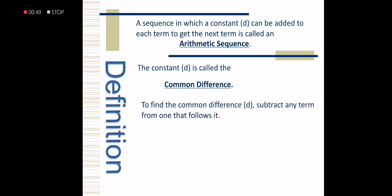To find the common difference d, subtract any term from one that follows it. For example, we have the sequence 1, 4, 7, 10, and 13.